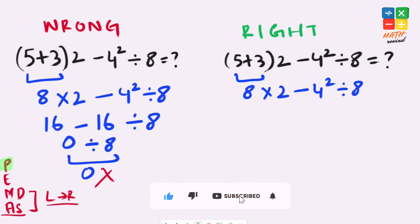Second priority is exponents. So let's solve exponents. We keep 8 times 2 as it is minus 4 square is 16 divided by 8.